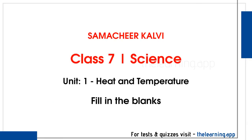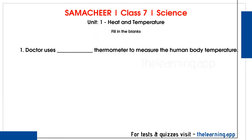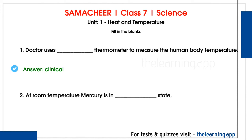Next, fill in the blanks. First question: a doctor uses dash thermometer to measure the human body temperature. Correct answer is clinical thermometer. There are two types of thermometers: clinical thermometer and laboratory thermometer. A doctor uses the clinical thermometer. Second question: at room temperature, mercury is in dash state. Correct answer: liquid state.